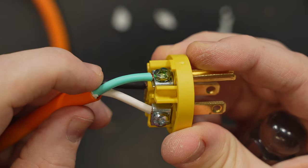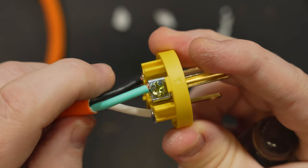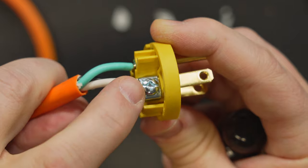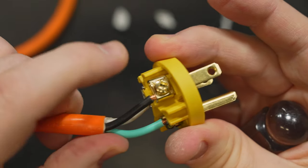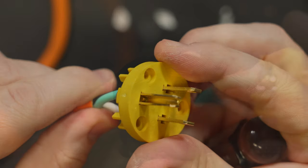With the connections complete I'm just going to double check that my ground wire which is green has gone to my ground lug which is also green. My neutral wire which is white has gone to my silver lug and the hot wire which is black has gone to the gold one. Those are all correct so I'm ready to close this up.